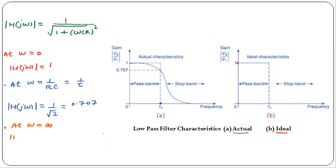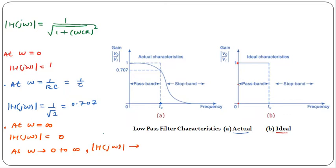At ω = ∞, |H(jω)| = 1/∞ = 0. So as ω varies from 0 to infinity, the magnitude decreases from 1 to 0. This is the ideal characteristic of the low pass filter: it passes frequency components up to Fc and blocks high frequency components above that. This is the ideal characteristic, and the practical characteristic shows a gradual rolloff.